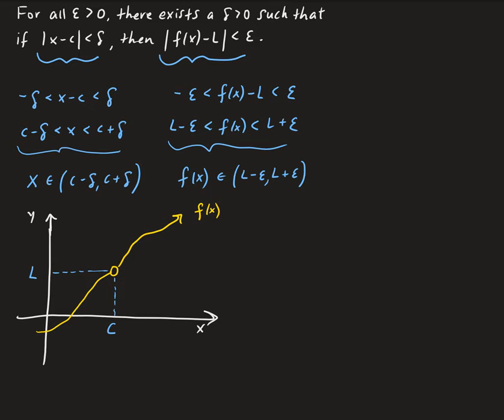Looking at the first neighborhood where x belongs to (c minus delta, c plus delta), we can draw that along the x-axis — a neighborhood surrounding c. The upper bound is c plus delta and the lower bound is c minus delta. c lies in that neighborhood at equal distance, so delta is acting as the radius of this neighborhood.